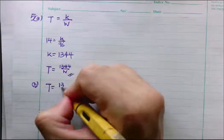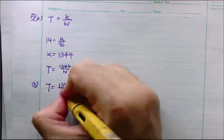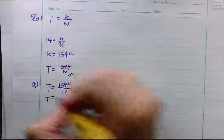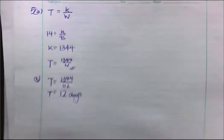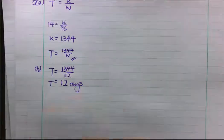T equals 1,344 over 112. The number of days is equal to 12 days. Simple enough for 5b. Most of you got this one correct as well.